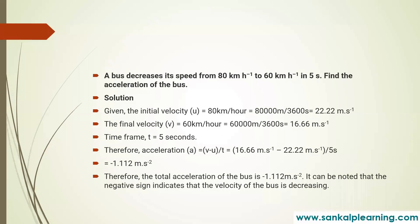To convert kilometer per hour into meter per second: one kilometer equals 1000 meters, and one hour equals 3600 seconds. So the conversion factor is 1000 divided by 3600, which simplifies to 5 divided by 18. So to convert kilometer per hour to meter per second, you multiply by 5 divided by 18.